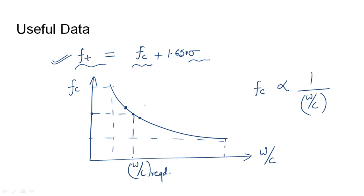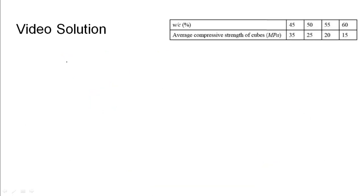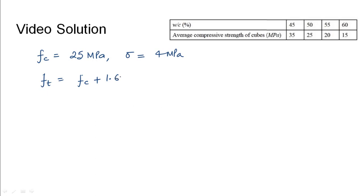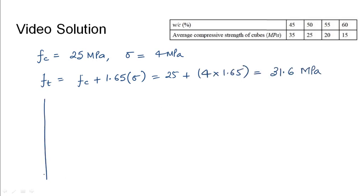For small intervals, linear interpolation can be used to obtain the required water-cement value. In this question, the characteristic compressive strength is 25 MPa and the standard deviation expected at site is 4 MPa. The target strength of concrete cubes is obtained as FC plus 1.65 times the standard deviation, which gives 25 plus 1.65 times 4.